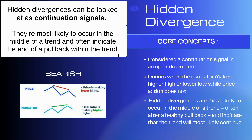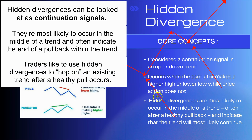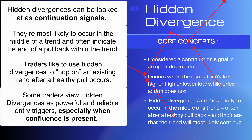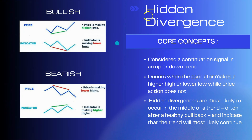To summarize hidden divergences: they can be looked at as continuation signals and are most likely to occur in the middle of a trend — often indicating the end of a pullback. Many traders like to hop on an existing trend after a healthy pullback, and these divergences help signal that. Some traders view hidden divergences as powerful and reliable entry signals, especially when confluence is present. Just to reiterate, you do not want to trade divergences on their own — you need other technical indicators and analysis tools to verify what you're seeing.